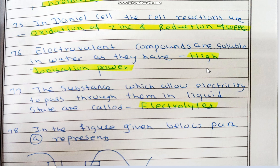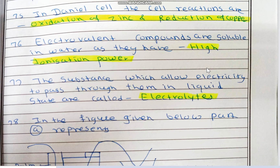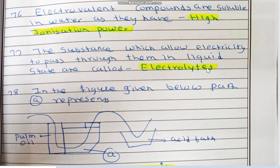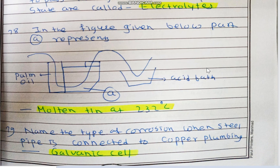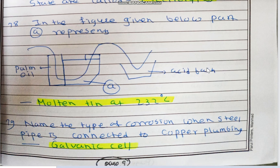Electrovalent compounds are soluble in water as they have high ionization power, meaning formation of ions is greater in electrovalent compounds. The substance which allows electricity to pass through it in liquid state is known as an electrolyte. In the figure given below, part A represents molten tin at 232°C, which is the melting point of tin — and this process is the tinning process.